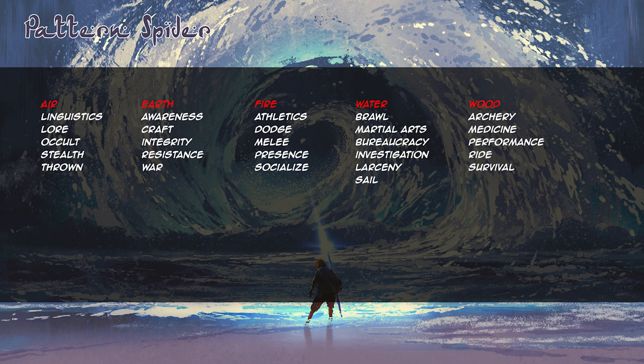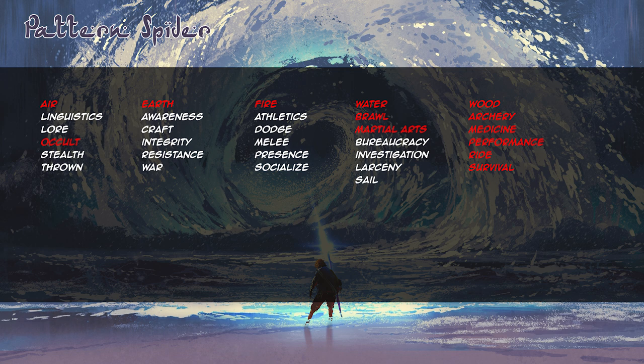We mark the wood aspect abilities as our caste abilities, then freely select five more favored abilities. I'm going to need occult to represent my interest in spirits. Brawl and martial arts will be needed to later get Wood Dragon style, which I want as my main combat style. I want war because she is trained as a soldier, socialize to reflect her social finesse when dealing with spirits, and integrity because I expect those spirits to try to manipulate her back.